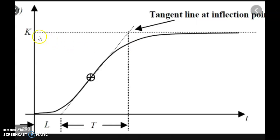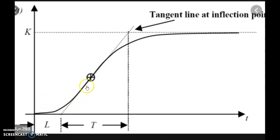Here you can see that K stands for the steady state value of the response, L is the delay time, and T is the time constant of the system. We draw a tangent line and where the tangent line hits the x-axis, that is the delay time. Extrapolating, when it hits the K line, that is the time constant of the system. Now I am going to find K, L and T for this system, and from those values I will calculate Kp, Ki and Kd.